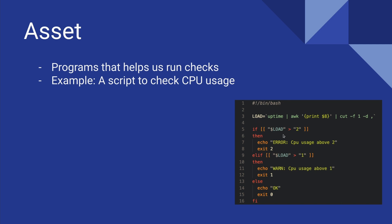In this script, if the load average is greater than two, it is a critical alert saying CPU usage is above two. If it is an error, it exits with an exit status of two. If the CPU usage is over one but less than two, it is a warning and exits with status one. If the CPU usage is less than one, everything is fine and the exit status is zero. For Sensu, it is a requirement that exit statuses are zero, one, or two depending on OK, warning, or error.